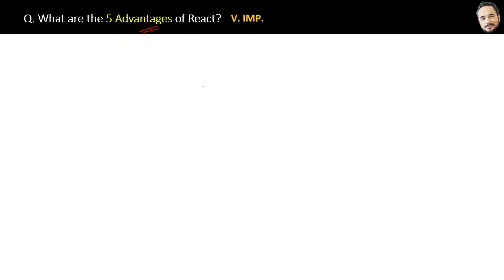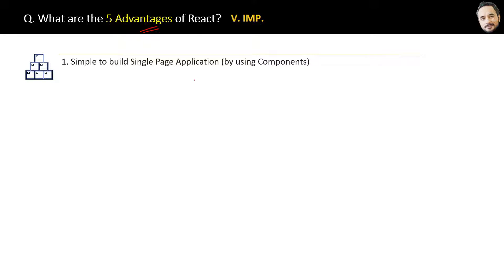The first one you already know — in React it's very simple to build a single page application, and that is by using components. In other words, React follows component-based architecture, which allows developers to create reusable components that can be used throughout the application, making the development process faster and more efficient.